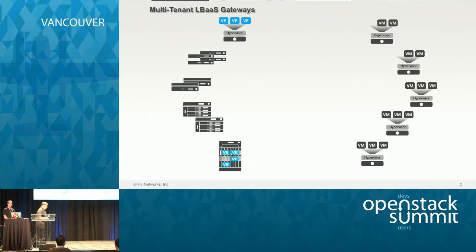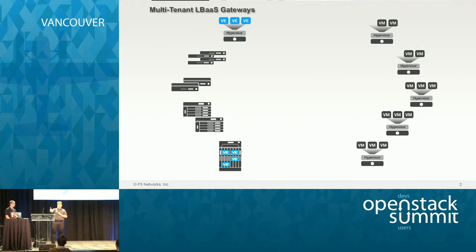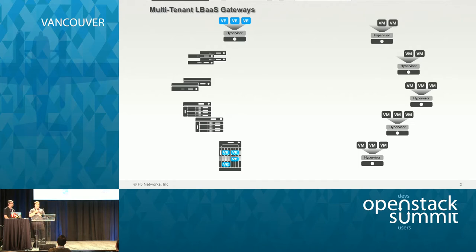One of the functions that is a necessity is to run LBAS in a multi-tenant way. We all know that OpenStack supports multi-tenancy and that the tenant model is very well defined. If you think about the resource consumption of a load balancer, there are many, many use cases where it makes no sense to burn all those resources to launch one VIP.